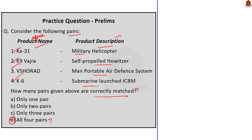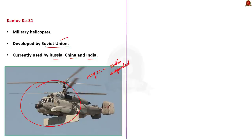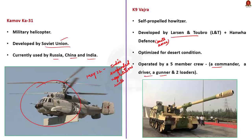KA-31 or Kamov KA-31 is a military helicopter originally developed by the Soviet Union, currently used by the Russian, Chinese, and Indian military. It made news in May 2022 when India suspended all negotiations with Russia regarding further purchases of KA-31s. K9 Vajra is the Indian Army's new self-propelled howitzer, jointly developed by Larsen and Toubro and South Korean defense manufacturer Hanwha Defense. It is optimized for desert operations. The crew of K9 contains five members: a commander, a driver, a gunner, and two loaders. Recently, K9 Vajra was in news as India planned to deploy them along the Line of Actual Control.